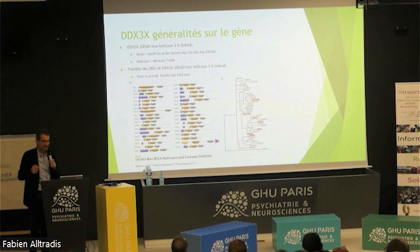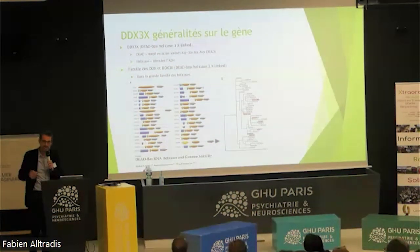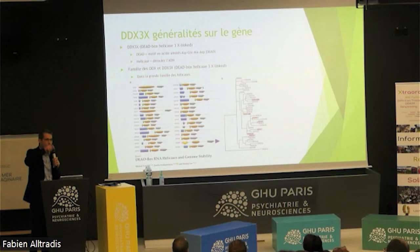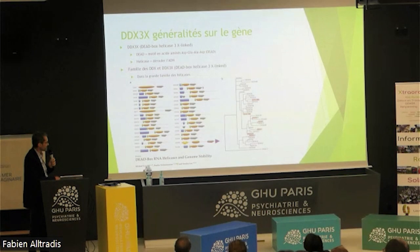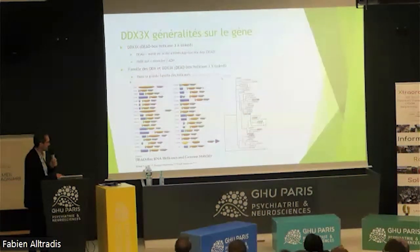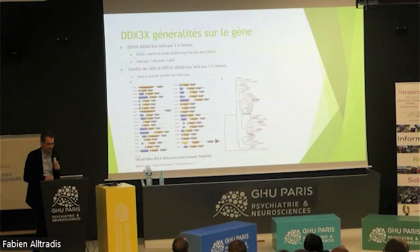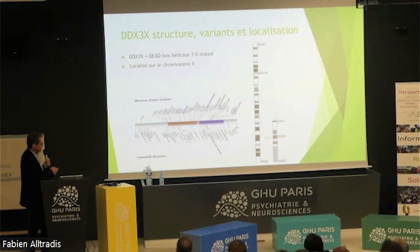What is DDX3X? It is a gene that is part of a wide family of genes. Sometimes genes are duplicated through development, meaning you can have many different copies and variants — DDX3X1, 3, 4, etc. The 'X' refers to the X chromosome. Here you can see the phylogeny — how these gene families evolved over time — and it functions as an RNA helicase, as we'll see later.